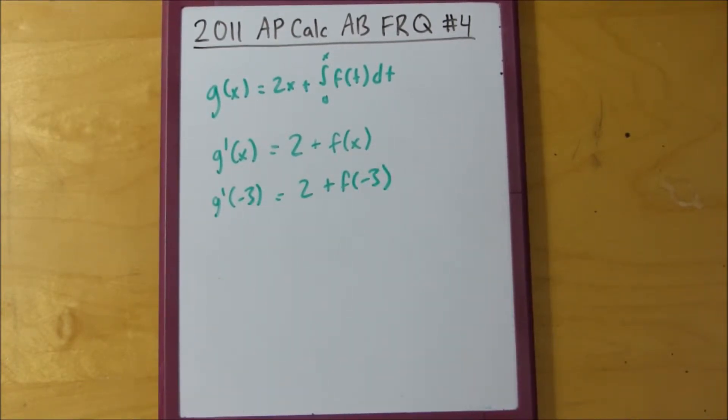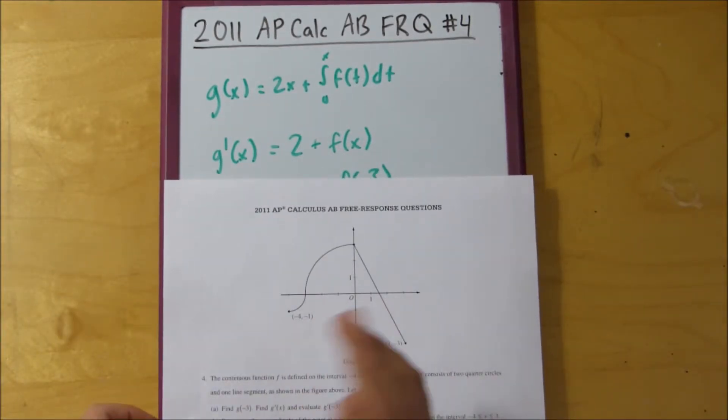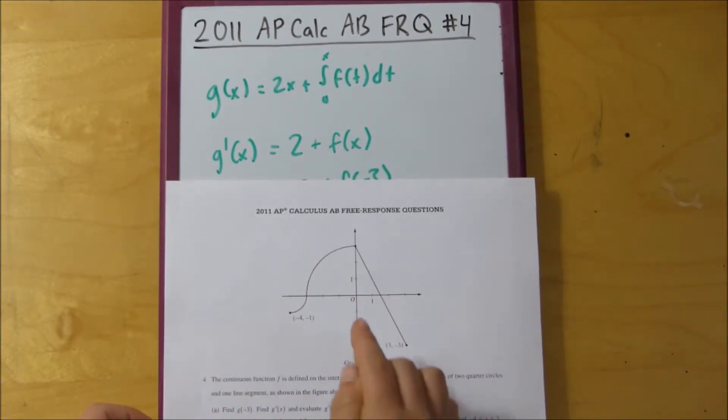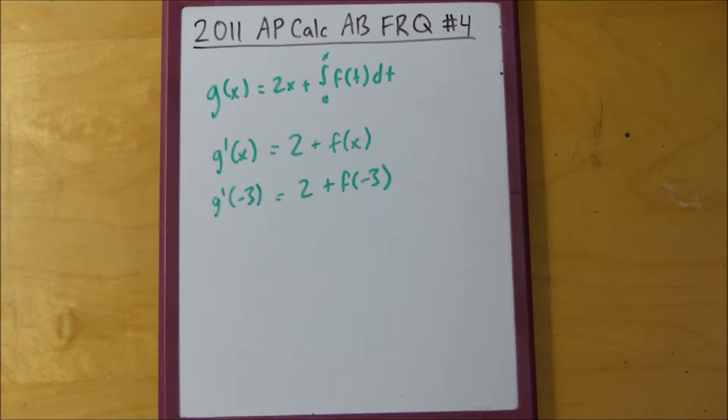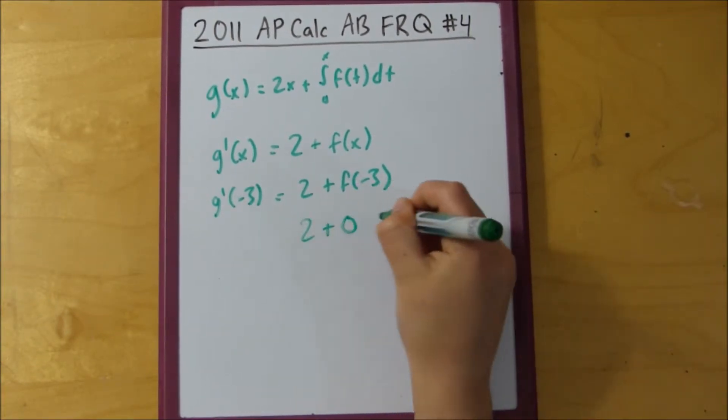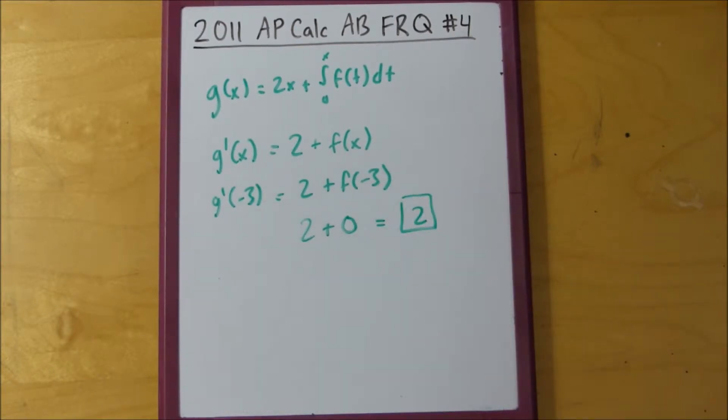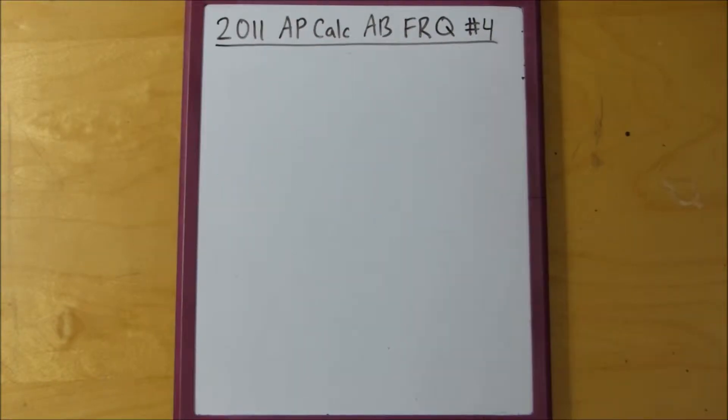Let me see, and then we just go back to our graph and we see what the y value, the corresponding y value to f of negative 3 is. So, negative 3 is this here, so it is 0. So, 2 plus 0 equals 2 and that is g prime of negative 3. So, this problem just depends on if you know what the Fundamental Theorem of Calculus is and if you can go from a derivative to use the derivative to find the area underneath the curve, just sort of that kind of stuff, right?